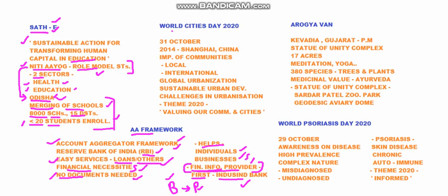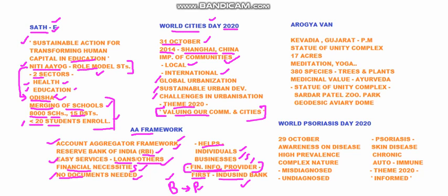The next topic is World Cities Day. World Cities Day is celebrated every year on 31st October. It first started in 2014 in Shanghai, China. It reiterates the importance of communities — both local and international — and addresses topics like global urbanization, sustainable urban development, and challenges in urbanization. The theme for 2020 is 'Valuing Our Communities and Cities.'